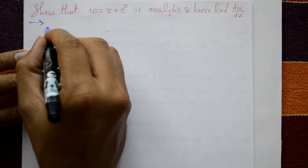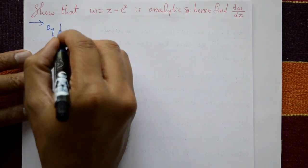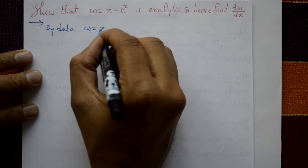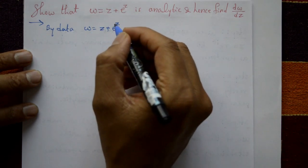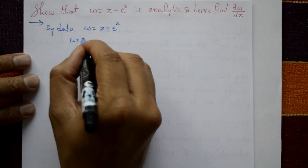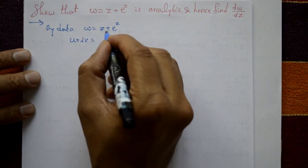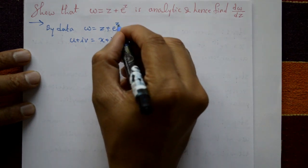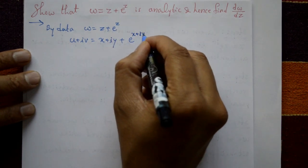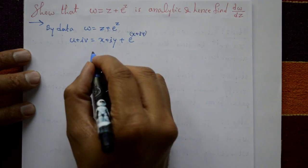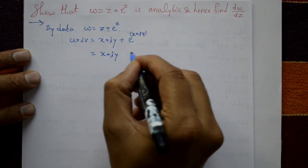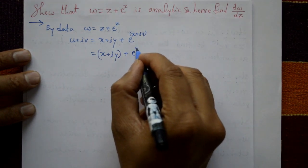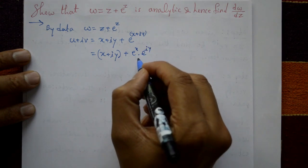Given: w = f(z) = z + e^z. Now w = u + iv is a complex number, and z = x + iy. So w = x + iy + e^(x+iy), which can be split as x + iy + e^x · e^(iy).